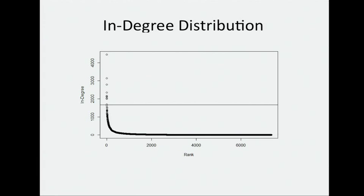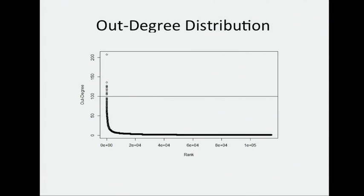Here we have the in-degree distribution of our quantitative traits. We see most of the transcripts have one or two loci which they interact with, and a small number of transcripts are interacting with a large number of loci. Here's the other side of that — the out-degree distribution of the loci — and we see the same sort of thing where a small number of loci are interacting with a large number of transcripts.